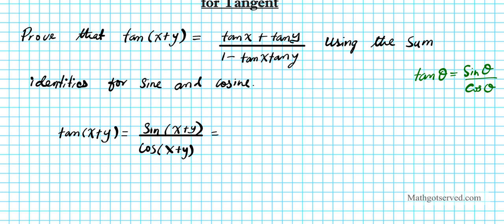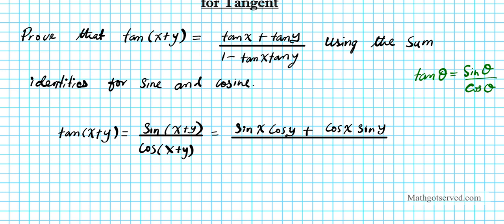Now we are going to make use of the sum identities for sine and cosine. The sum identity for sine is: sine(x + y) = sine x cosine y + cosine x sine y. And the sum identity for cosine is: cosine(x + y) = cosine x cosine y minus sine x sine y.